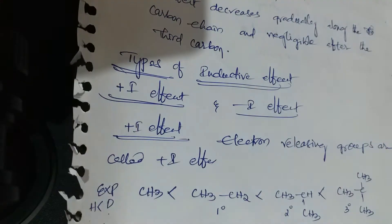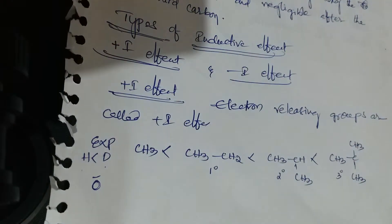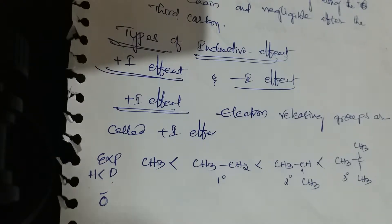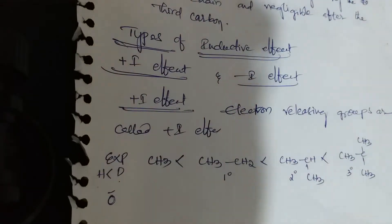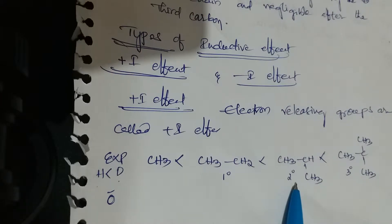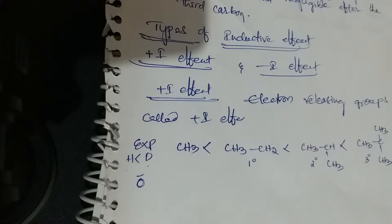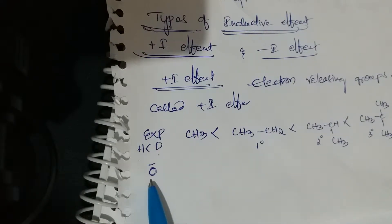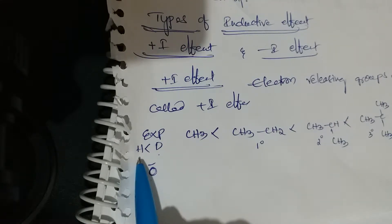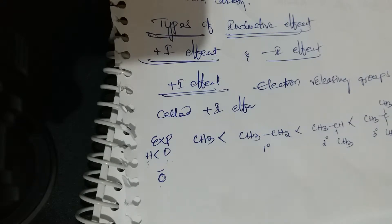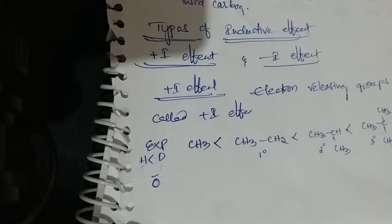What are the electron-releasing groups? All alkyl groups are electron-releasing groups — methyl, ethyl, propyl, primary alkyl, secondary alkyl, and tertiary alkyl. Out of these, tertiary alkyl is more releasing than secondary, secondary is more releasing than ethyl, and ethyl is more releasing than methyl. The electron-releasing order is: O⁻ > H > deuterium... and these are all +I effect groups.